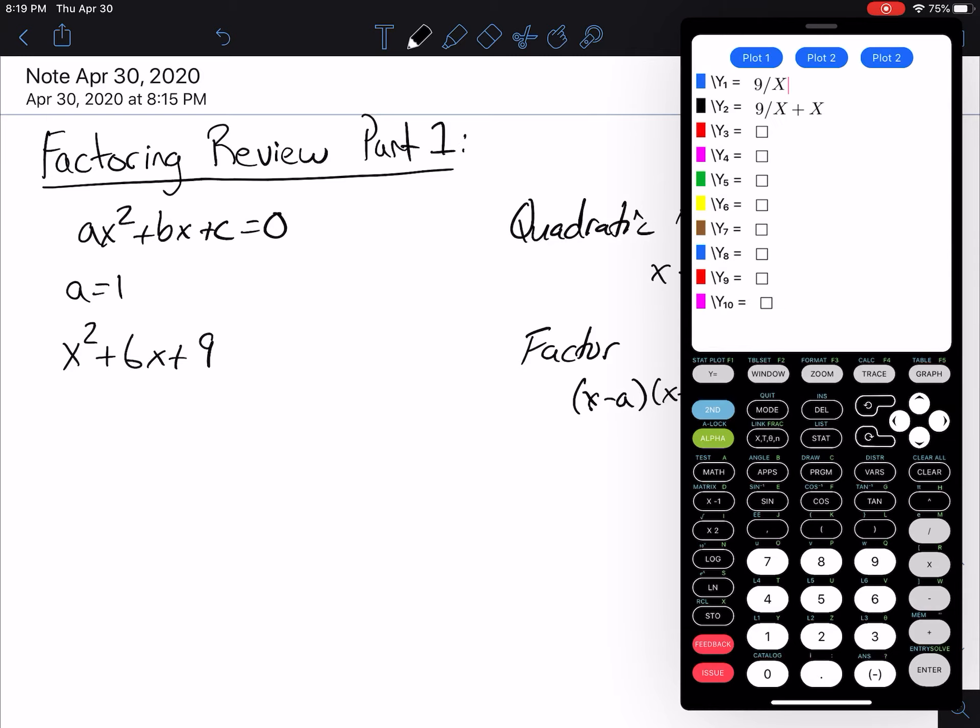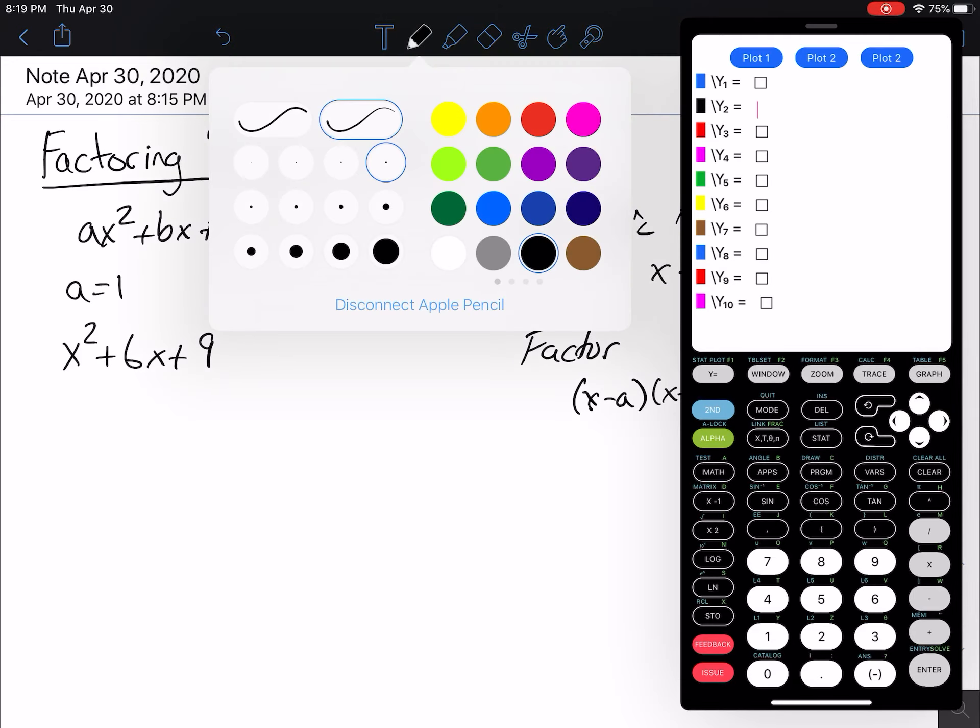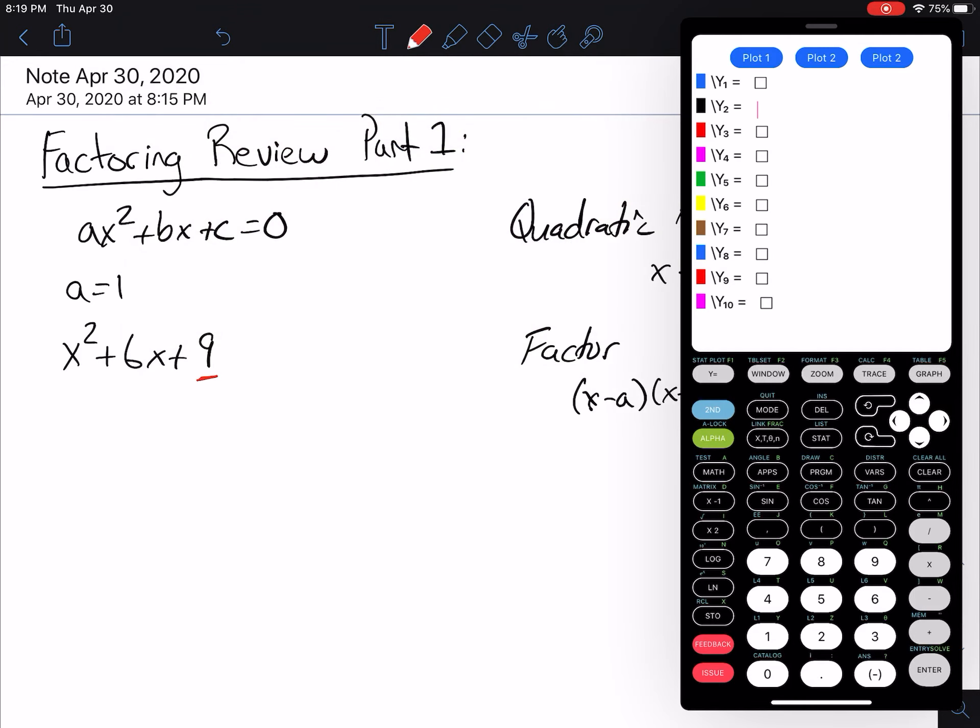So if you remember, we go to y equals, and I have some stuff in there, we want to clear that out. And what we do is we look at that c term. So for us, that c term, that last term here is a 9. And so we're going to be doing 9 divided by x. And then in y2, we're going to be doing 9 divided by x plus x.